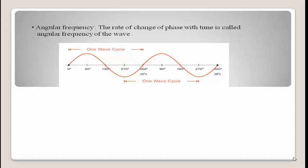Since 2π/T can be written as 2π × (1/T), and frequency f = 1/T, we can substitute to get: ω = 2πf. So, angular frequency (ω) equals 2π multiplied by frequency. Angular frequency is measured in radians per second.